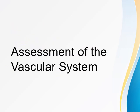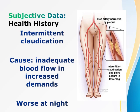In assessing the vascular system, an important history to obtain is the occurrence of intermittent claudication — a muscular, cramped-type pain, discomfort, or fatigue in the extremities. It is reproduced at the same degree of exercise and relieved by rest, caused by inadequate blood flow due to narrowed vessels or vasospasms. It is worse at night, and placing the leg in a dependent position may help improve peripheral perfusion.